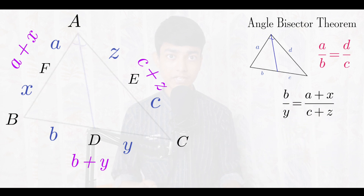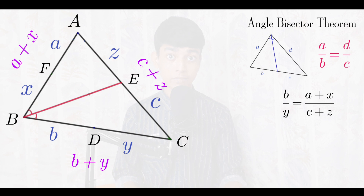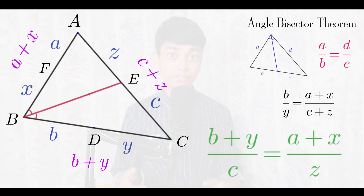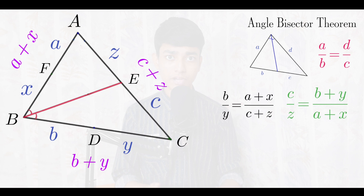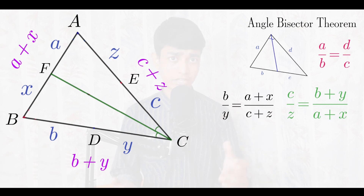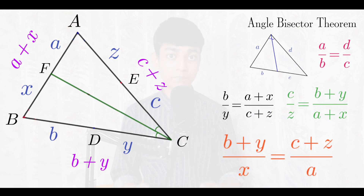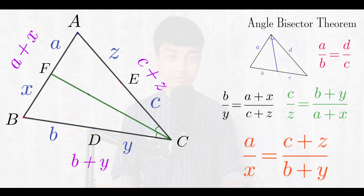Now bring back segment CF and remove BE. Again, CF is the angle bisector for C, so we can use the angle bisector theorem. This gives (b + y) over x equals (c + z) over a. After cross multiplication we get a over x equals (c + z) over (b + y). Keep this as equation 3.